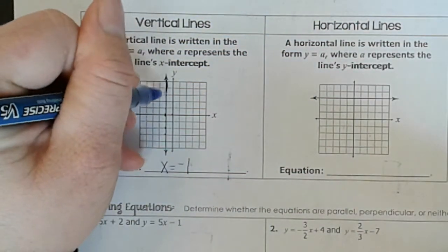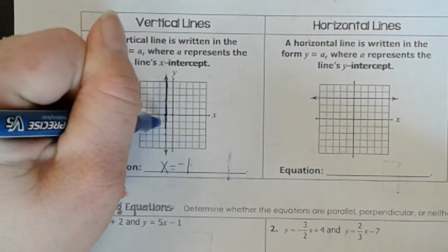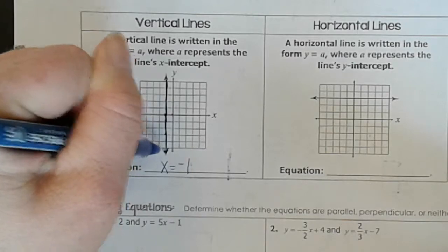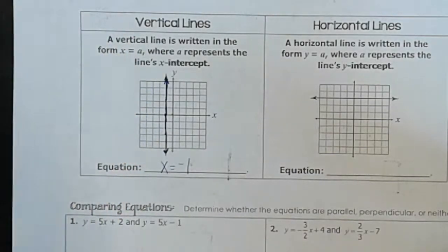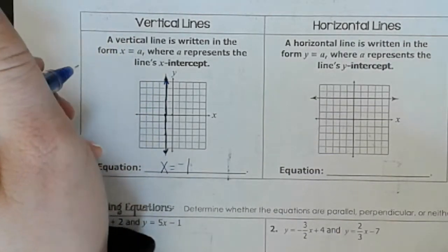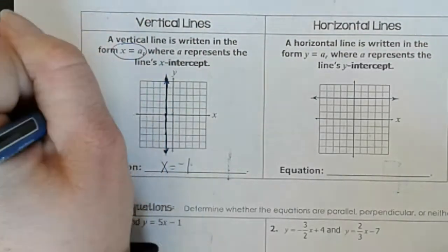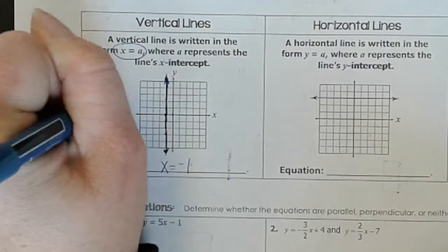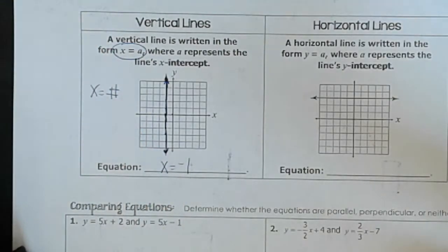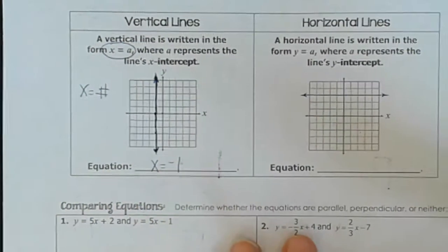So the equation for this line would just be x equals negative 1. Because it doesn't matter, my y value doesn't matter at all, my x value will always be negative 1. So a vertical line is always going to have this form, x equals a number, whatever number that line is on.